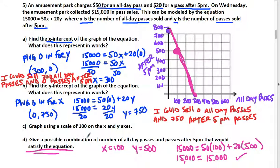So a possible combination would be 100 all-day passes and 500 passes after 5 p.m.